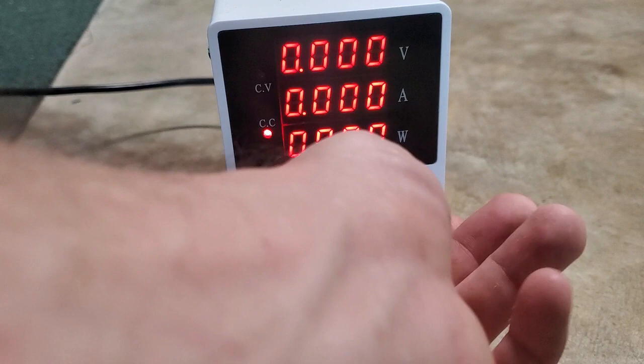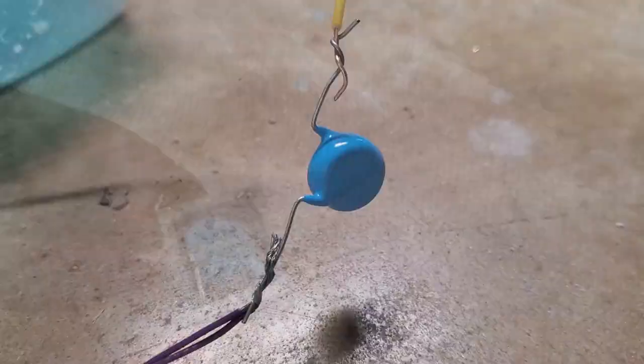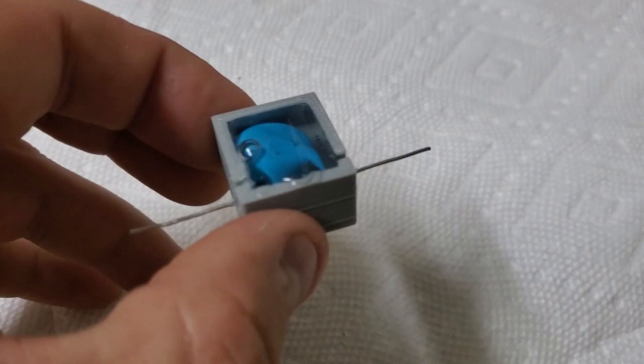The next big problem I ran into was that the capacitor leads would arc to each other at 20,000 volts, causing the circuit to not charge. To solve this problem, I printed some cases for the capacitors and filled them with hot glue, which should have a much higher breakdown voltage than air.